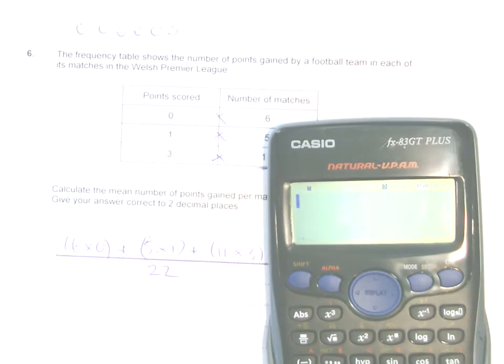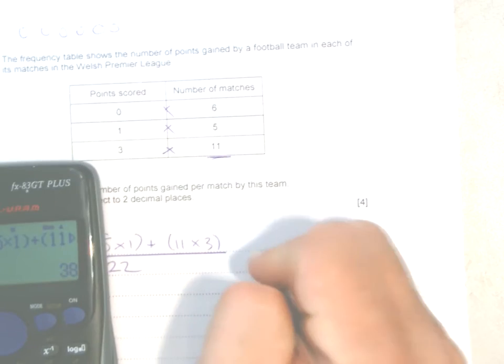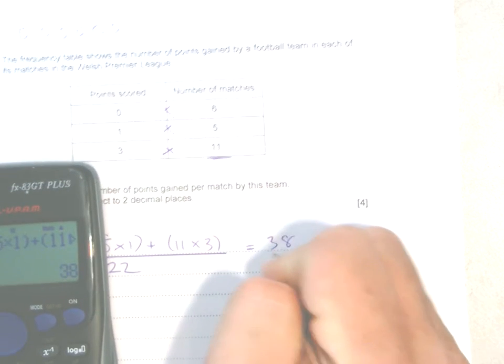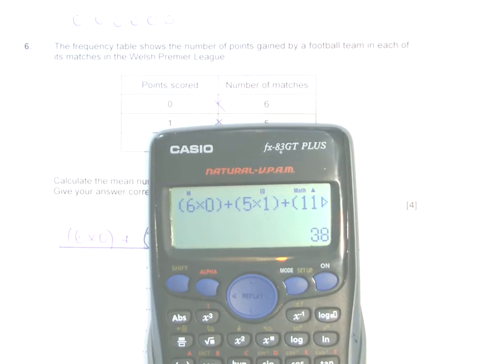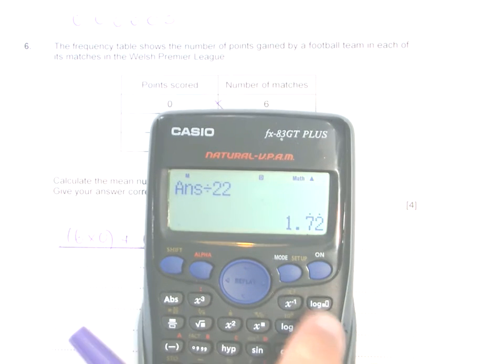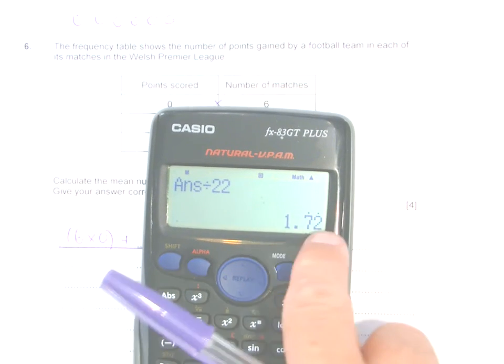On my calculator then, I would work out the top first. So you've got 6 × 0, plus 5 × 1, plus 11 × 3. That becomes 38 divided by 22. Then on your calculator, divide that answer by 22 and you get your answer out.